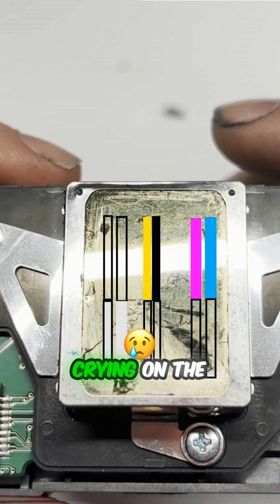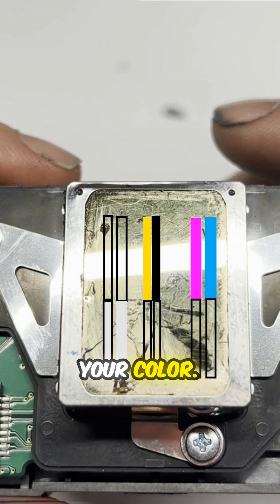I've seen people crying on the Facebook group. They print a nozzle check and say, oh, I got a deadline tomorrow, now my white clogged. And I always reply, oh, rotate your color.